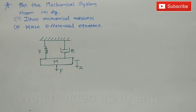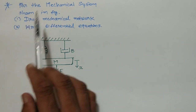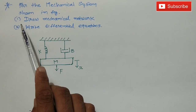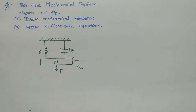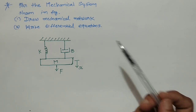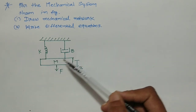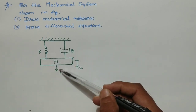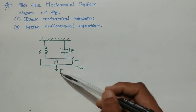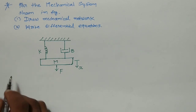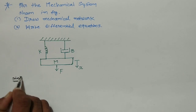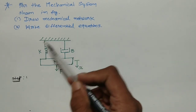In this video we discuss an example based on mathematical modeling of a mechanical system. The example is: for the mechanical system shown in the figure, draw the mechanical network and write the differential equation. The mechanical system has three elements — spring, damper, and mass — connected to each other. A force is applied to the mass, causing displacement given by X.